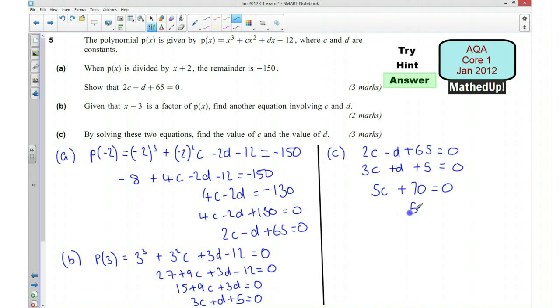Which means 5c is going to be equal to negative 70, so c is going to be equal to negative 14. Okay, now that I know that c is negative 14, I can choose to substitute that back into one of these equations here. So I'm going to substitute it into this top equation.